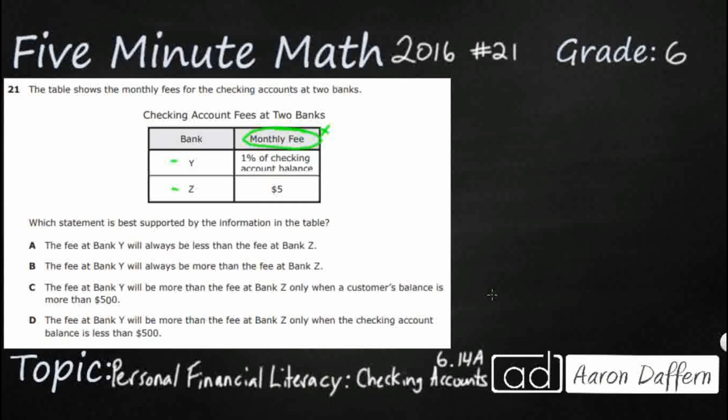We just need to find which statement is best supported by the information in the table. So, the bank fee at Y will always be less than the bank fee at Z. The bank fee at Z is pretty simple — $5. We don't know what the bank fee of Y is simply because it is a percentage.